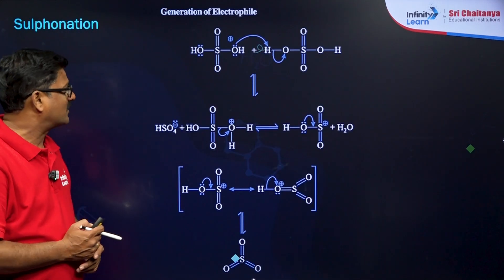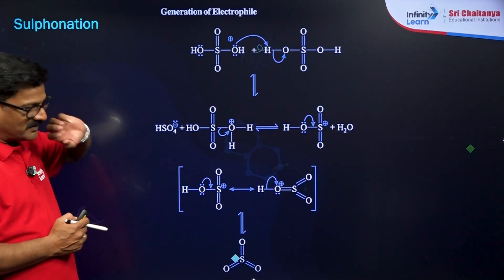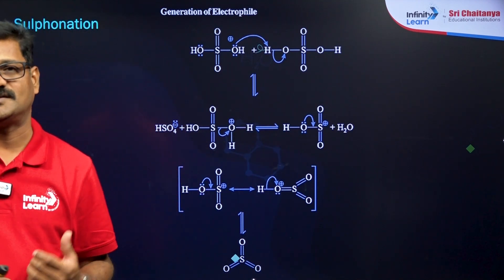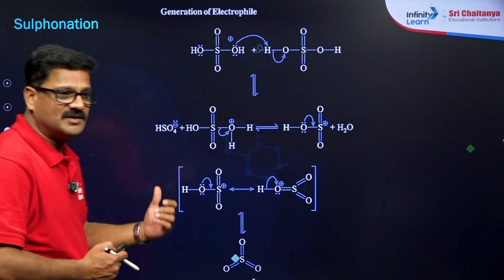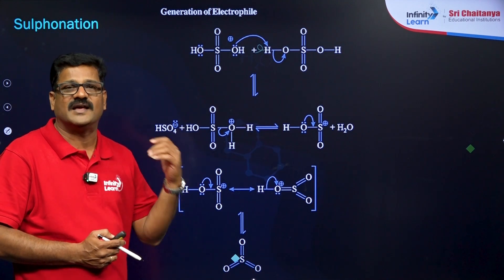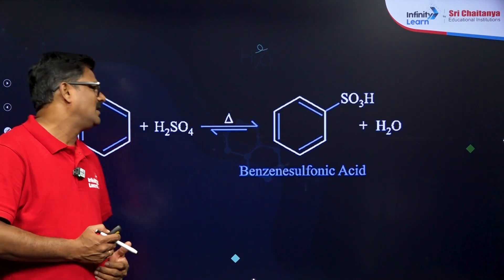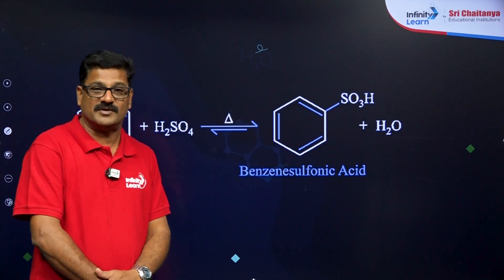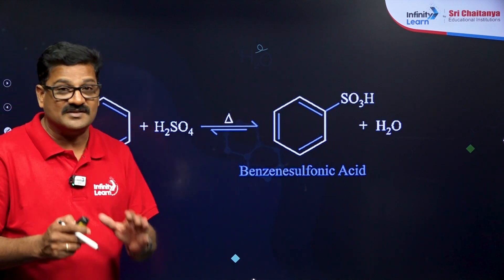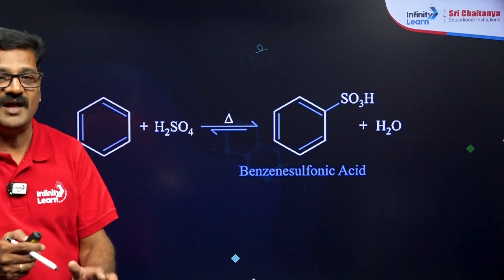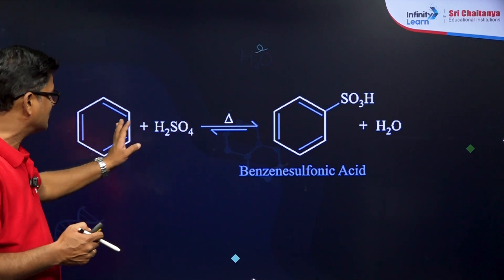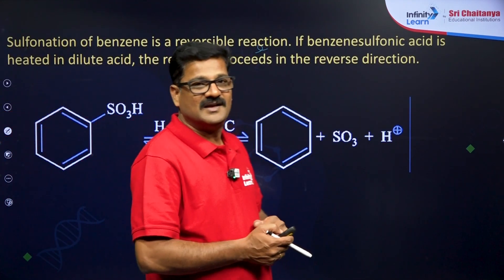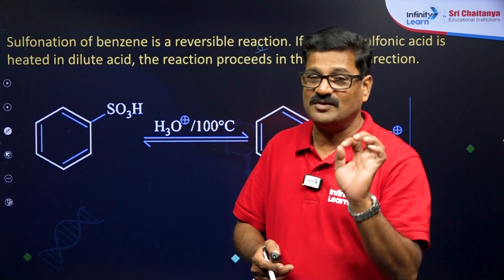For sulfonation, SO3 acts as the electrophile. Concentrated fuming sulfuric acid acts as the electrophile here, and benzene is converted to benzene sulfonic acid. This reaction is slightly reversible — when benzene sulfonic acid is hydrolyzed, you get benzene again. So this reaction is absolutely reversible.